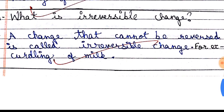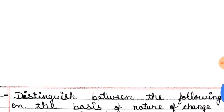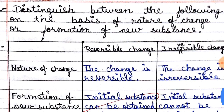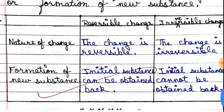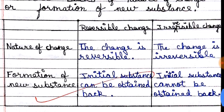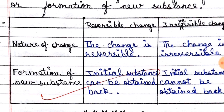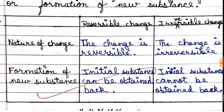Like the curdling of milk — once milk becomes curd, it cannot be turned back into milk. That is an irreversible change. Next: distinguish between reversible and irreversible change on the basis of nature of change and formation of new substance. In a reversible change, the nature of change can be undone and the initial substance can be obtained back. For example, drawing on paper with pencil — the pencil marks can be erased. In an irreversible change, a new substance is formed and the original cannot be recovered.